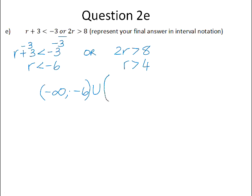So the second interval will be r is greater than 4. So 4 will be the smallest number in that interval. Also gets a round bracket, because it's just a greater than sign. And it will go to infinity, which will also get a round bracket.